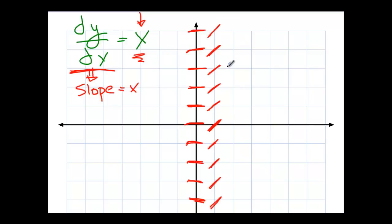Likewise, if we go to points to the left of the y-axis and we look at their slopes there, all of the points that have an x coordinate of -1 are going to have a slope of -1.